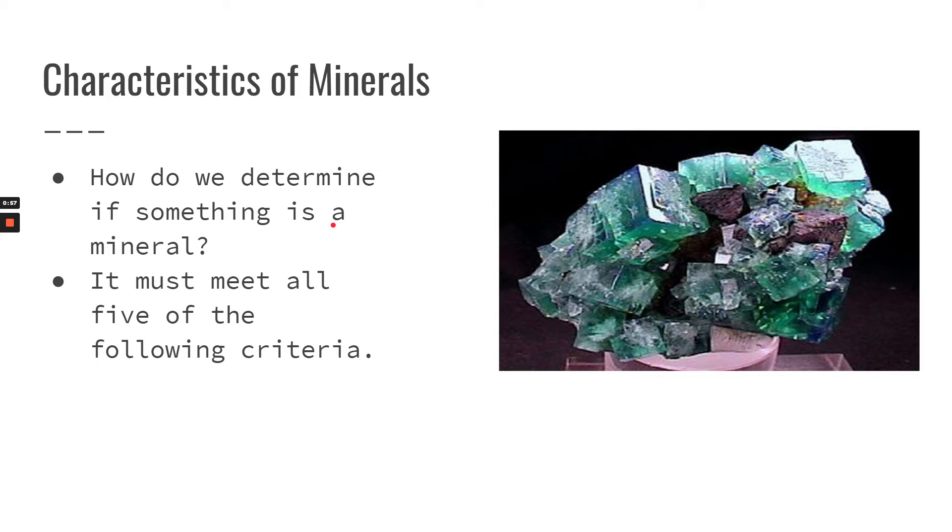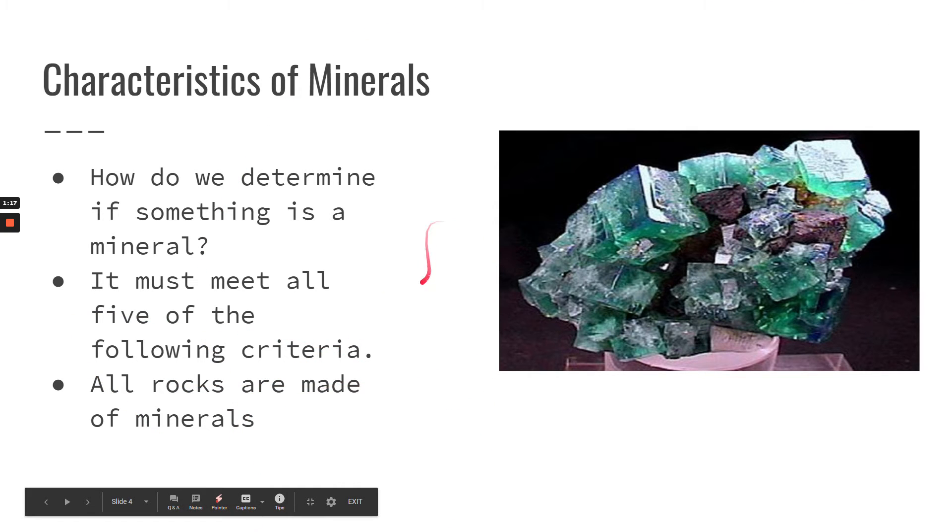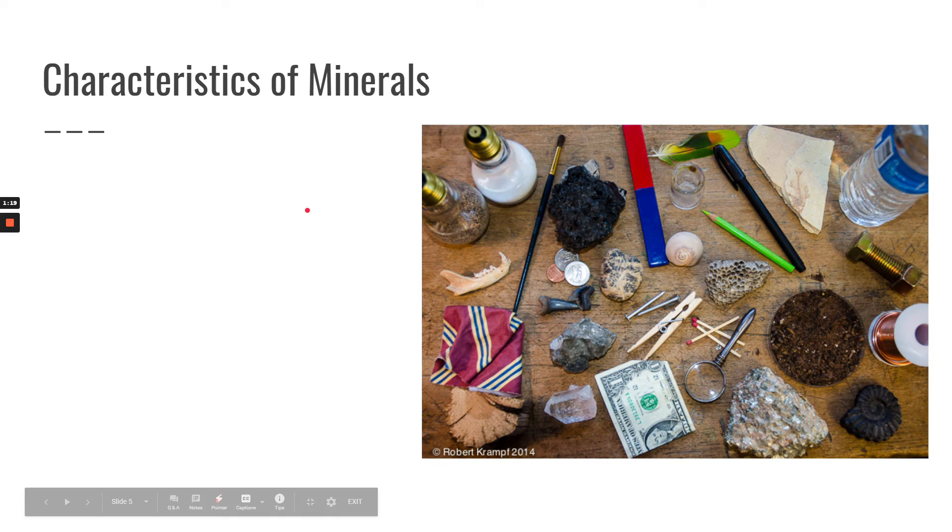In order to be considered a mineral, an object must meet all five of the following criteria. And just a note, all rocks are made of minerals. So we're starting a new unit on rocks and minerals. In order to really understand the characteristics of rocks, we need to understand what they're made of first. So we're going to go through all five of these criteria, one at a time.